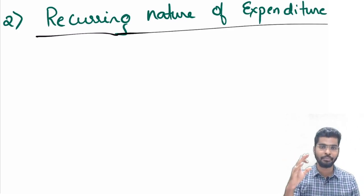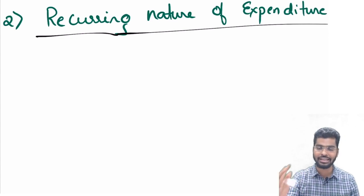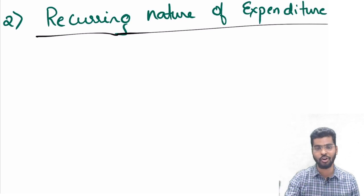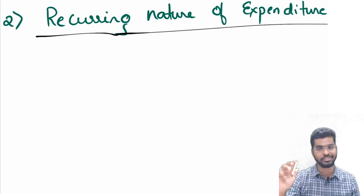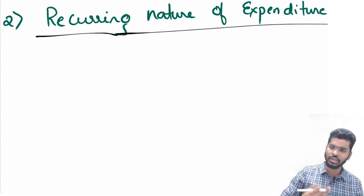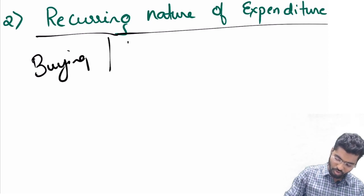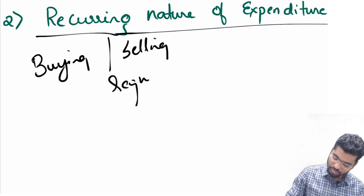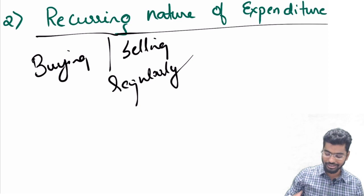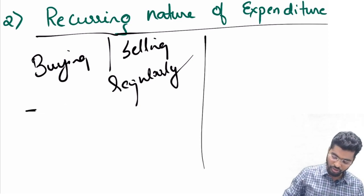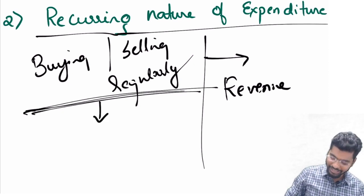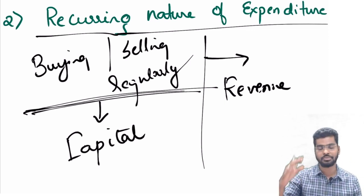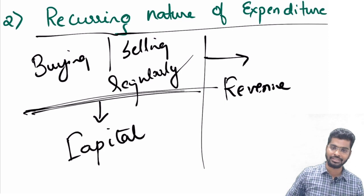The second consideration is the recurring nature of expenditure. Would you buy a building every month, or would you buy a building for using it for a long-term purpose? When do you pay salary — do you pay it monthly, or do you pay somebody a salary for 10 years at one shot? A capital expenditure is not something you get into the habit of buying or selling regularly. If your objective is to buy and sell regularly, it becomes revenue. If it happens only once in a while, it becomes a capital expenditure.